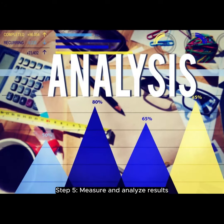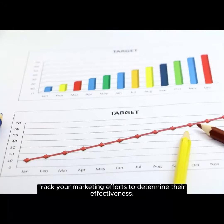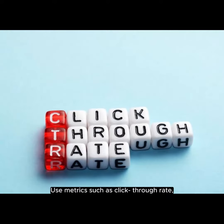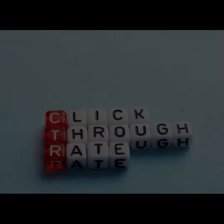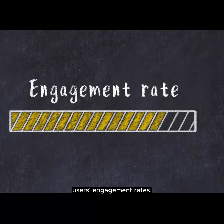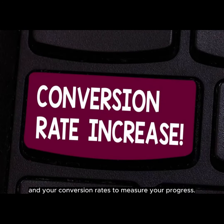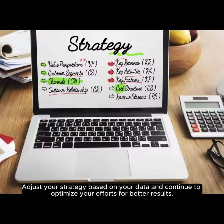Step 5: Measure and analyze results. Track your marketing efforts to determine their effectiveness. Use metrics such as click-through rate, engagement rates, and conversion rates to measure your progress. Adjust your strategy based on your data and continue to optimize your efforts for better results.